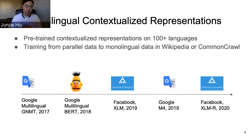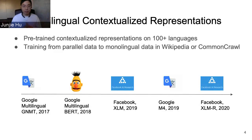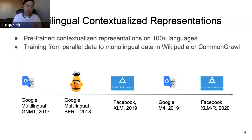Starting from 2017, Google proposed a multilingual translation model that can translate from one language to multiple languages, or from multiple languages to a single language. Starting from 2018, Google also proposed multilingual BERT, a pre-trained model on hundreds of languages using Wikipedia text, which provides a good initialization for many NLP tasks. Later, Facebook and Google also proposed advanced models trained on much larger datasets, such as Facebook's cross-lingual language model and cross-lingual language model RoBERTa.